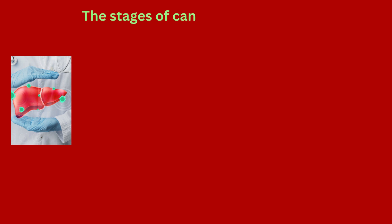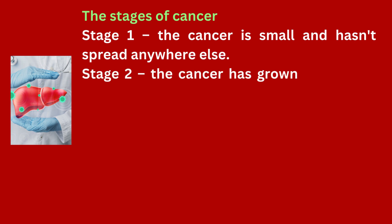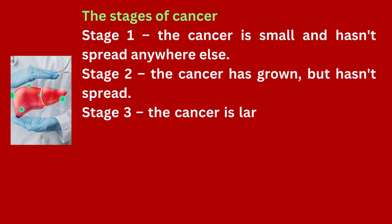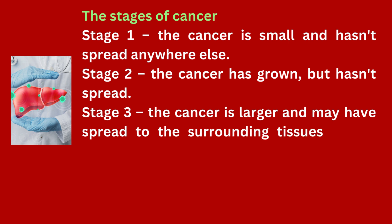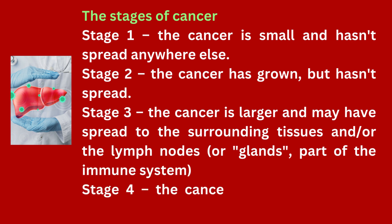The stages of liver cancer: Stage 1 — the cancer is small and hasn't spread anywhere else. Stage 2 — the cancer has grown but hasn't spread. Stage 3 — the cancer is larger and may have spread to the surrounding tissues and/or the lymph nodes or glands, which are part of the immune system.